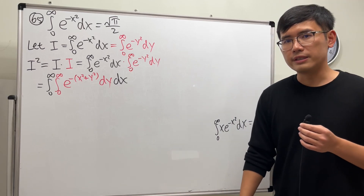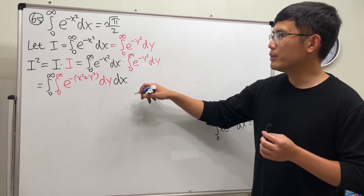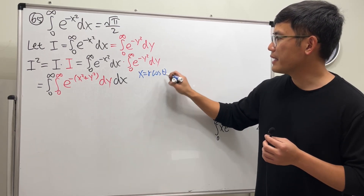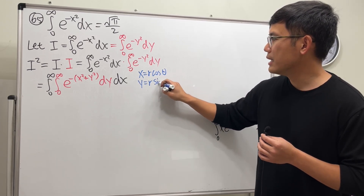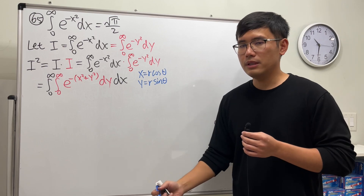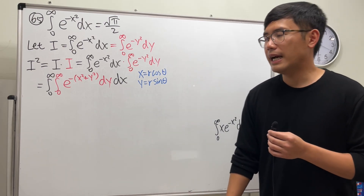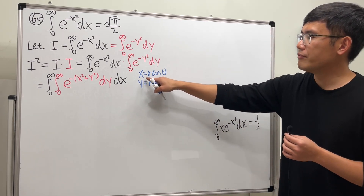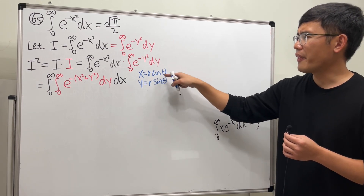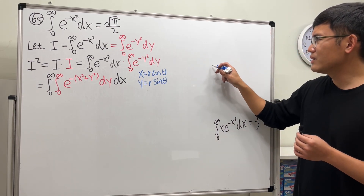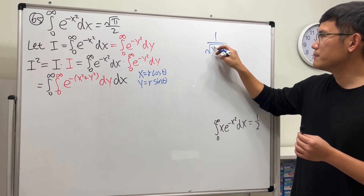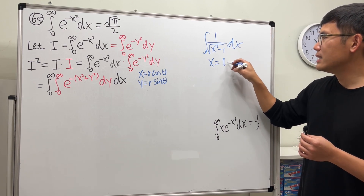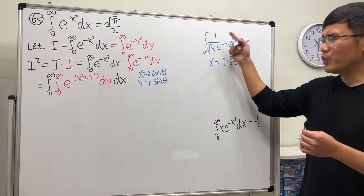Ladies and gentlemen, I introduce polar coordinates. From Calc 2 we know x equals r cosine theta and y equals r sine theta. It has two variables x and y. This is somewhat similar to what we did earlier when we computed another integral using x equals secant theta — a trigonometric substitution.